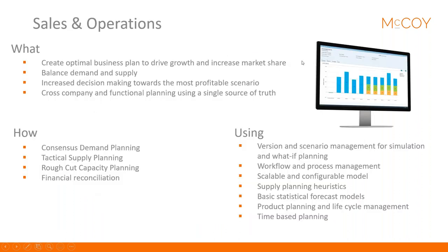The core module is sales and operations, which allows you to create an optimal business plan to drive growth and increase market share. You can balance demand and supply and do a functional cross-company plan using a single source of truth. It includes a consensus demand plan, tactical supply plan, rough cut capacity planning, and financial reconciliation. You can also do version and scenario management with simulations and what-if planning, run supply planning heuristics, use basic statistical forecast models, and manage product life cycles.